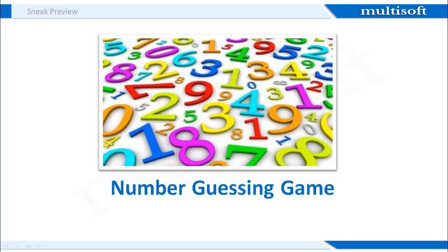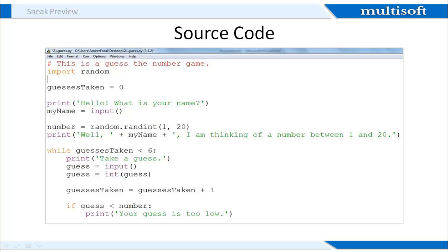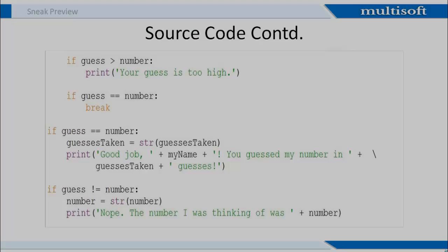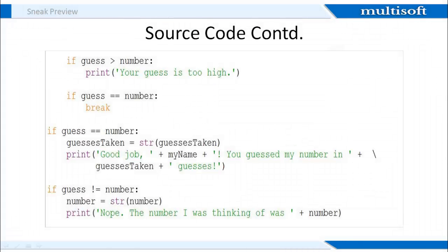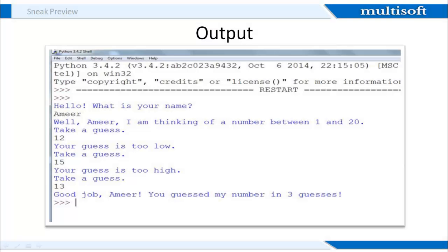The next example is the popular number guessing game. While it is very simple to write with Python, it is a great introduction to big-time software development as well as game programming. The random built-in module is used for random number generation. The guesses_taken variable stores how many guesses the player is going to take. The print function displays the prompt on screen, and the input function is for user keyboard input. RANDINT is a method inside the Python random module, used for generating a random integer between 1 and 20. The while loop allows the user to enter input again and again, and the if statement is used for conditions. This screen shows the steps written in continuation to the previous screen. And here is the output of the game.